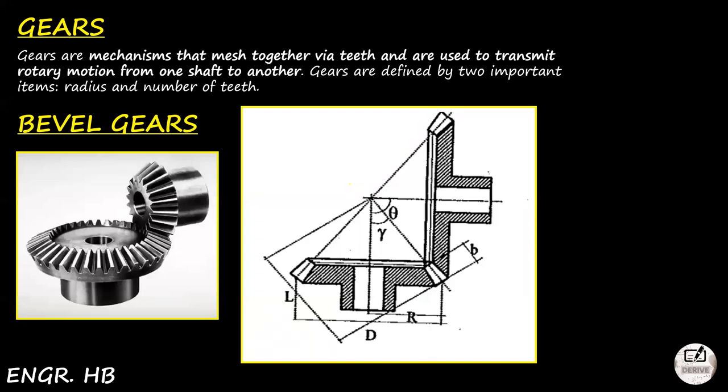Now for bevel gears. Bevel gears are used to connect intersecting shafts, usually but not necessarily at right angles. The most common type is mitre gears — bevel gears of the same size connecting shafts at right angles. The right angle here is the shaft angle theta, which is usually 90 degrees.